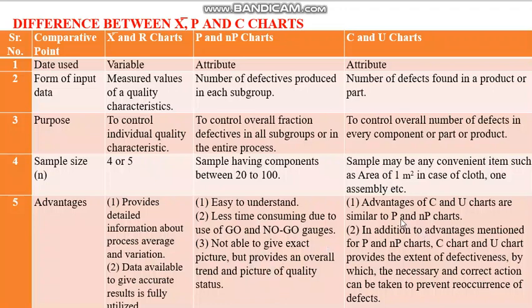C and U charts carry all the advantages of P and NP charts, and in addition, provide the extent of defectiveness, by which the necessary corrective action can be taken to prevent recurrence of defects. This is the key additional advantage of C and U charts compared to P and NP charts.